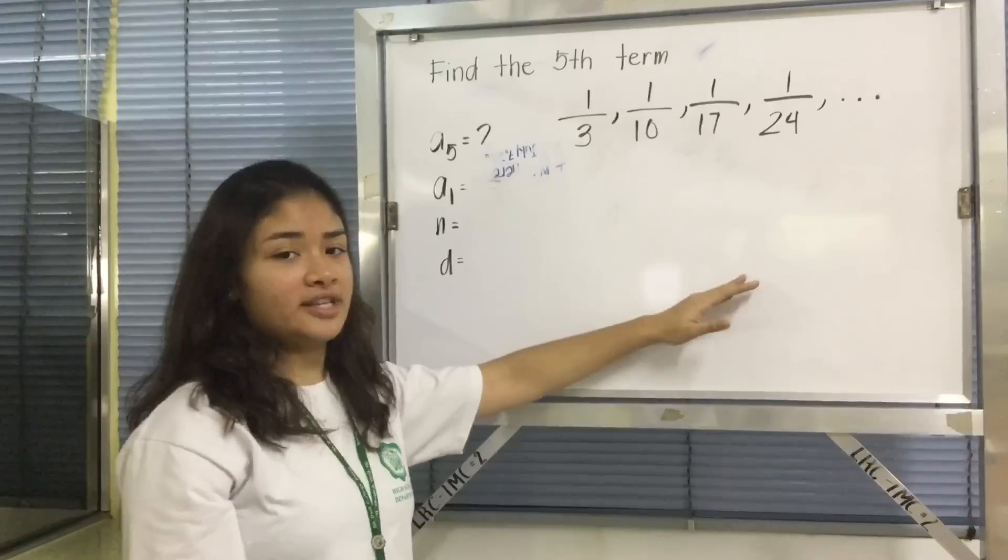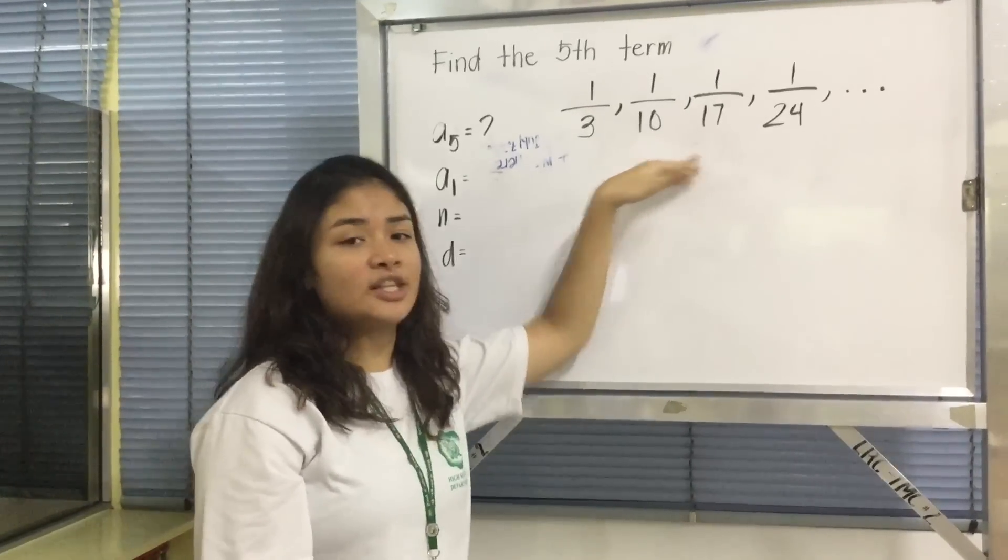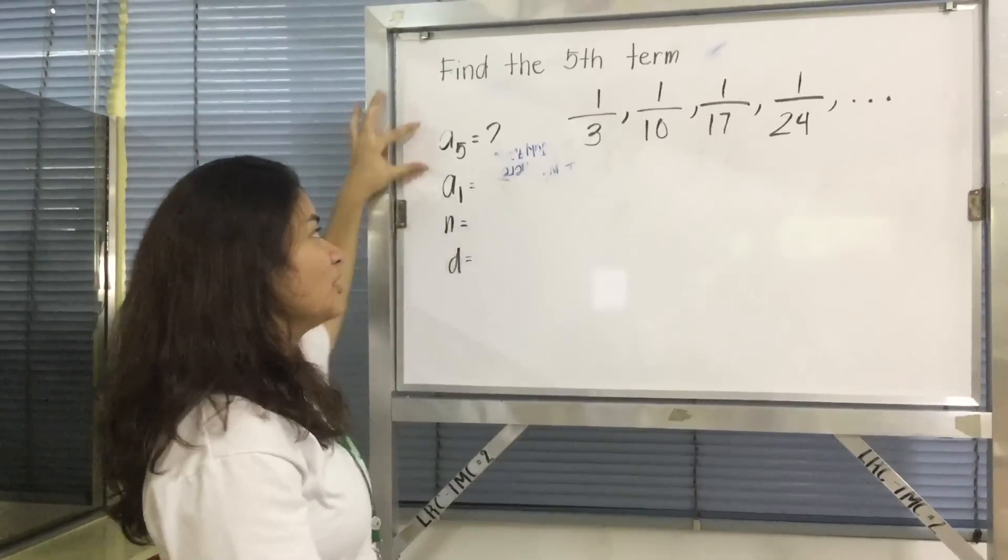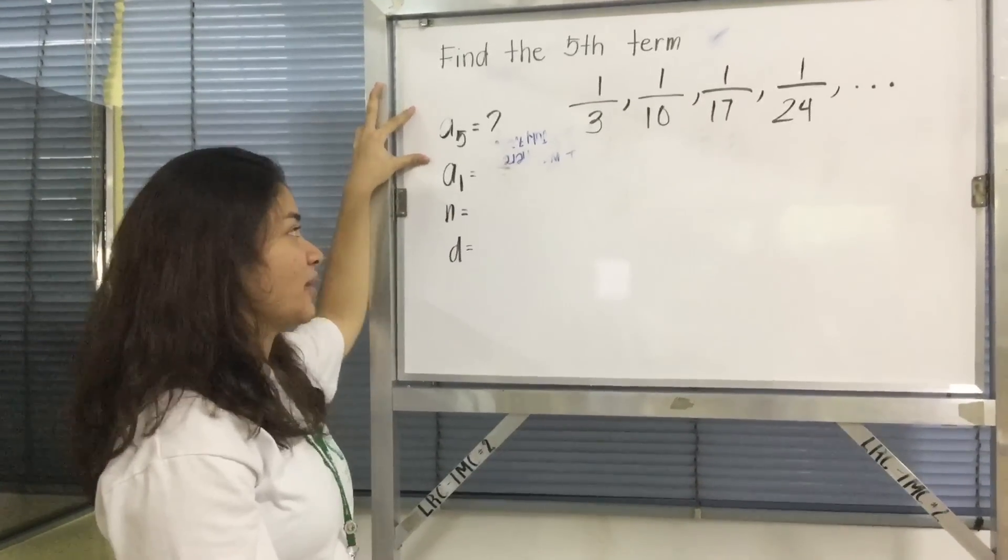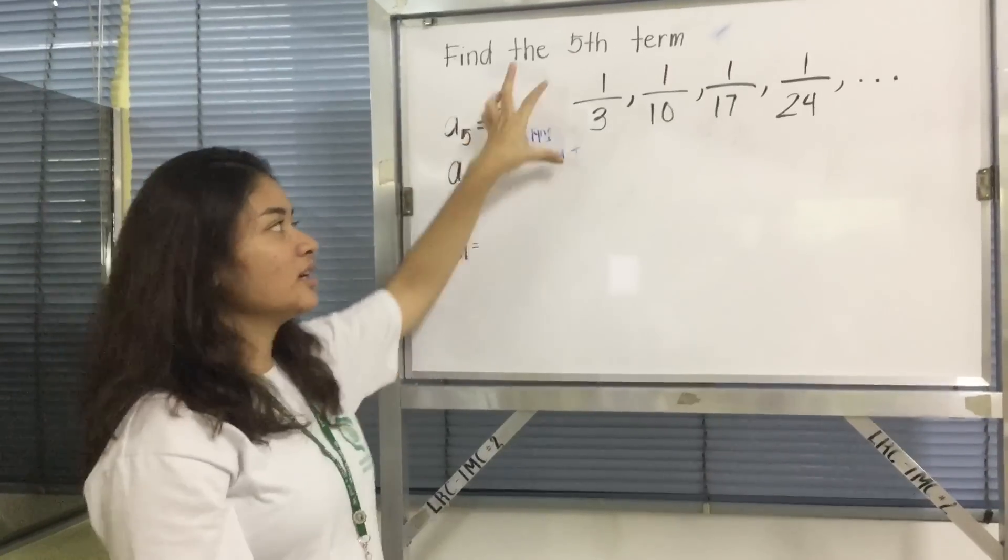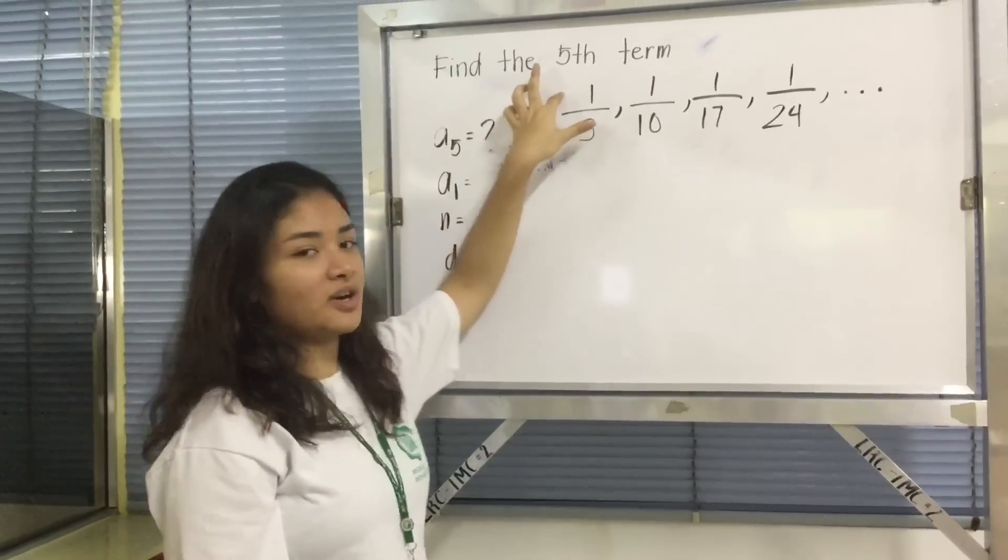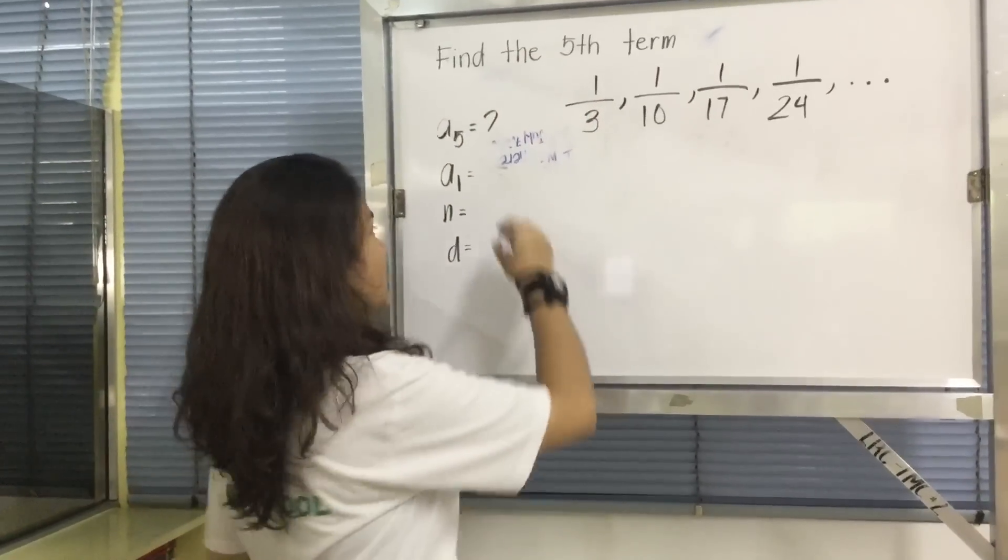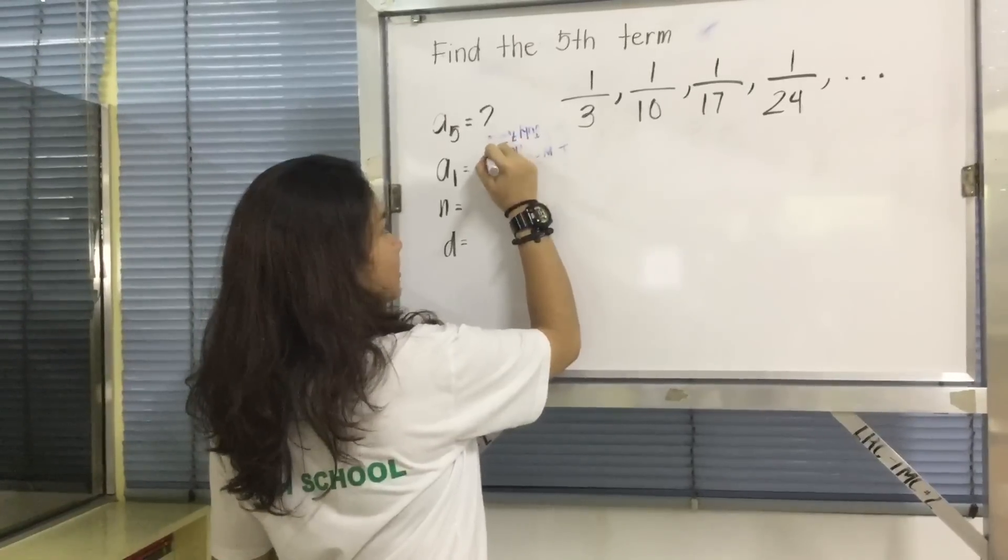Before you solve this, make sure to disregard the numerator. We are looking for a5. a1 is going to be 3 because we disregard the numerator. So we write a1 equals 3.